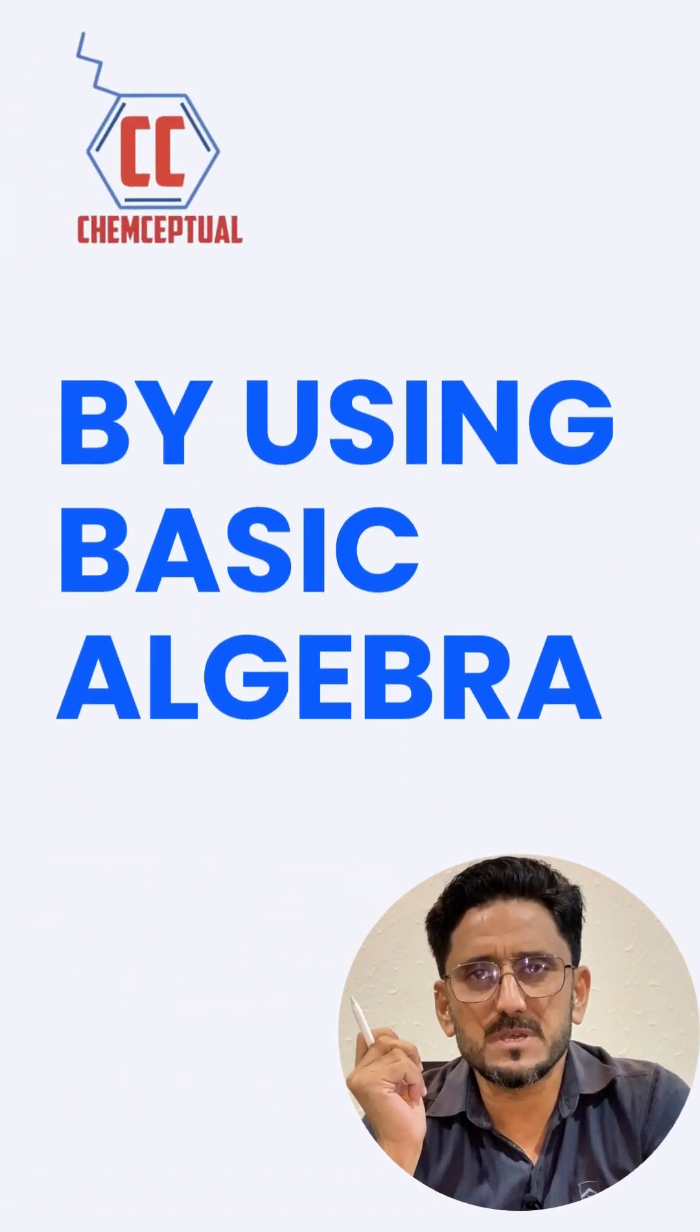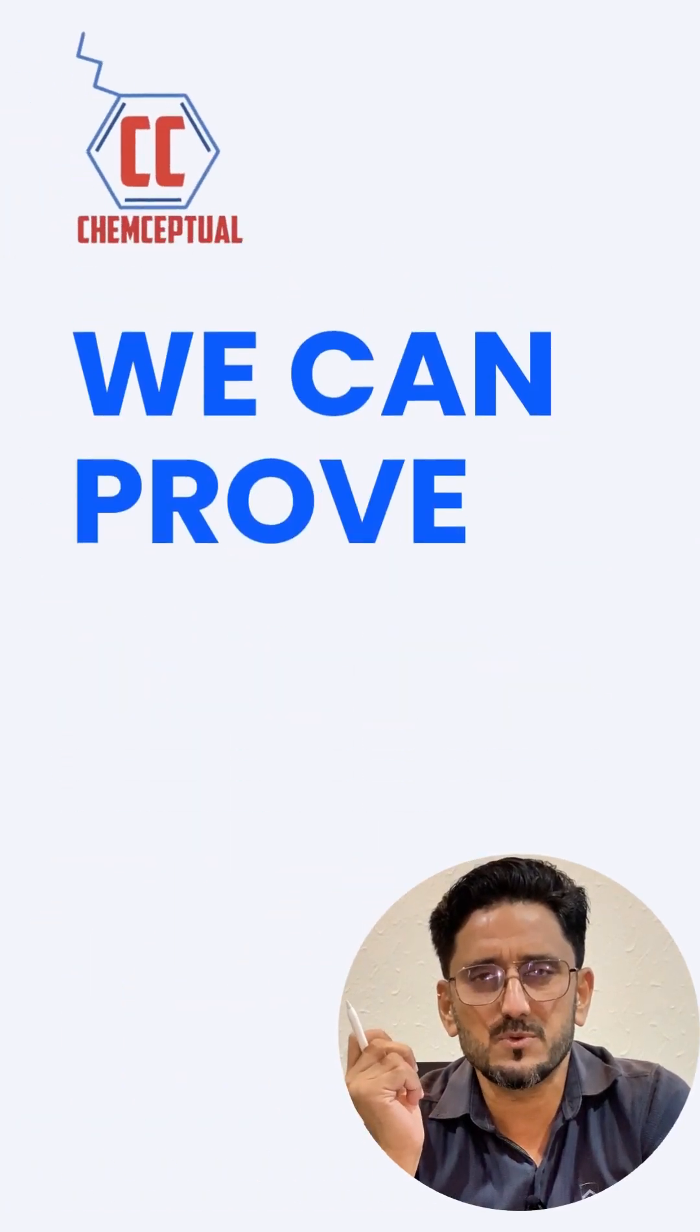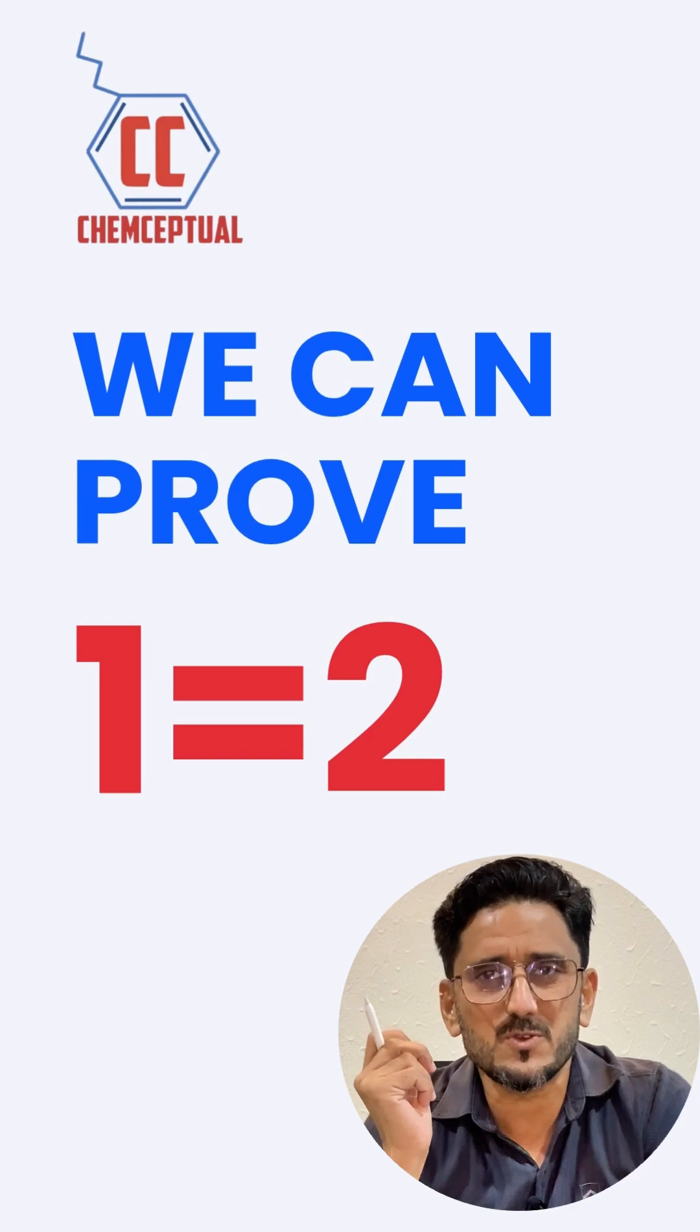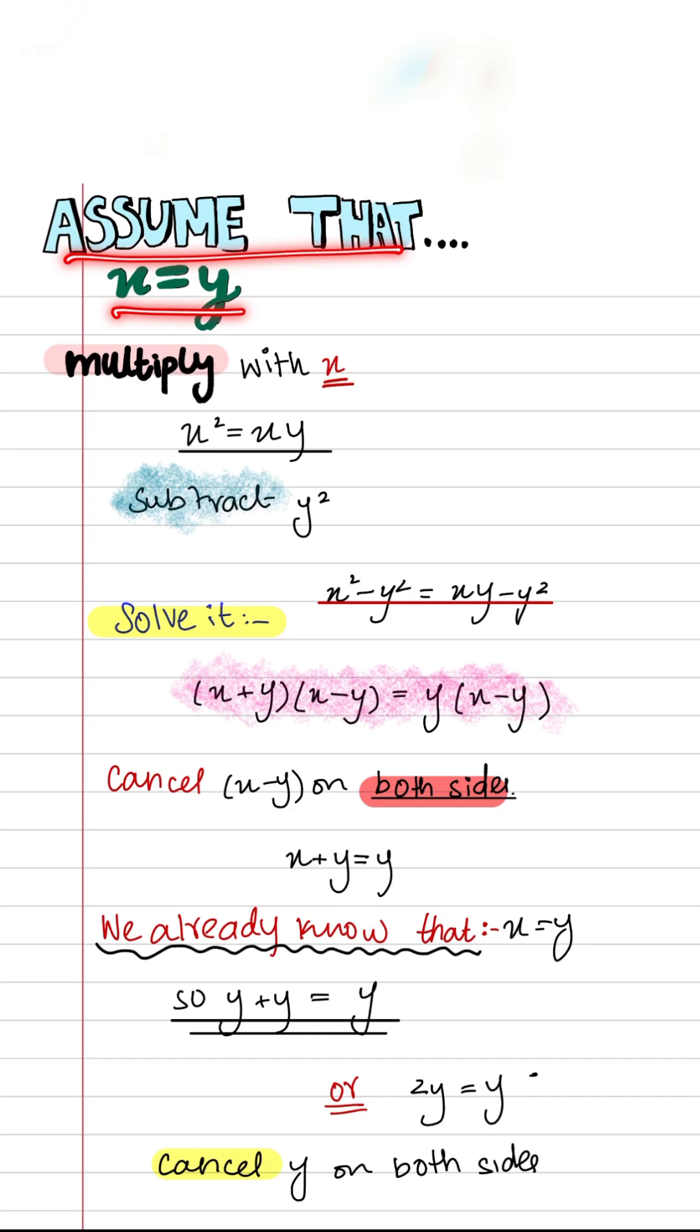Do you know by using basic algebra we can prove 1 is equal to 2? Assume that x is equal to y.